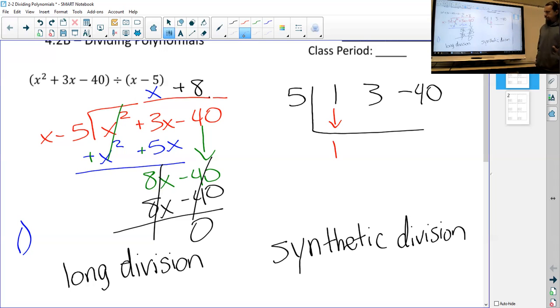Then we're going to multiply 5 by that first number, so 5 times 1 is 5. I'm going to bring it up here. Then I'm going to take these two numbers and instead of subtracting them, I'm going to add them and bring it down. So 3 plus 5 is 8, and then I repeat the process.